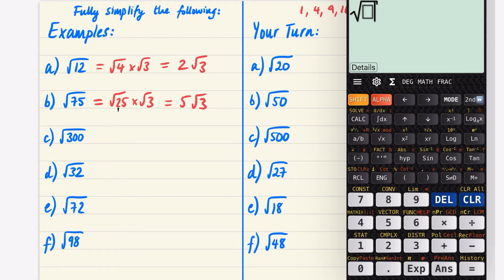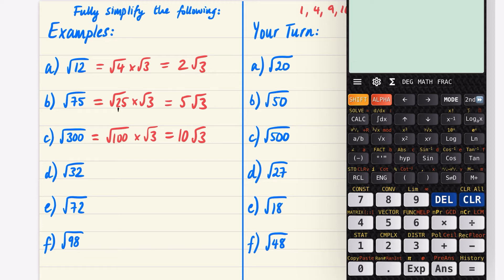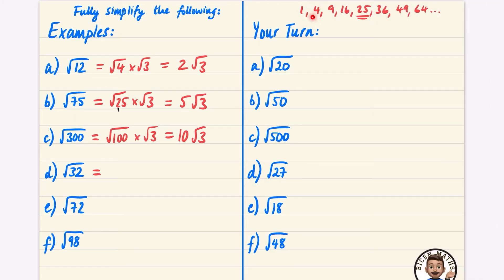The calculator confirms √75 = 5√3. For √300: 100 is a square number, and 300 = 100×3, so it's √100 × √3 = 10√3. The calculator confirms √300 = 10√3. For √32: both 4 and 16 go into 32, so I'll use the biggest — 32 = 16×2. √16 = 4, giving 4√2. For √72: it's in the 4 times table but also the 36 times table, so use 36.